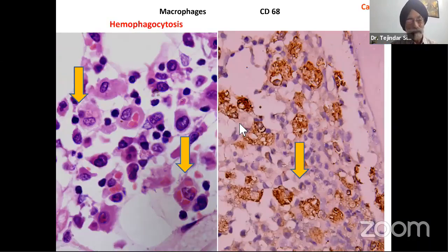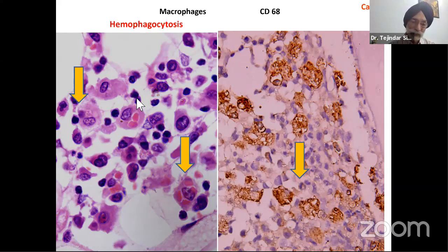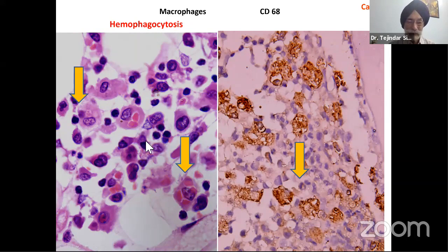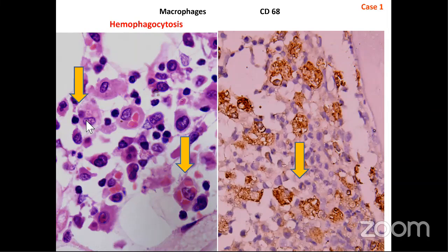On the bone marrow trephine biopsy, what we found was a similar picture — normoblastic reaction of the erythroid series, megakaryocytes were seen, and there were large macrophages present.